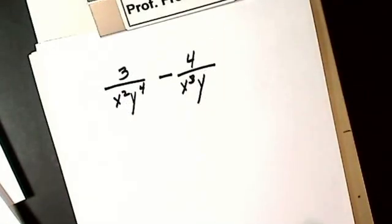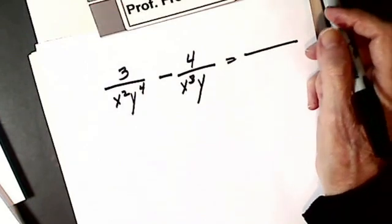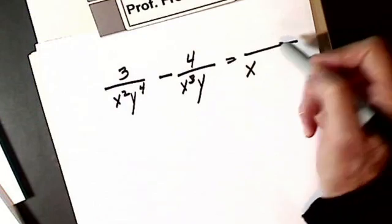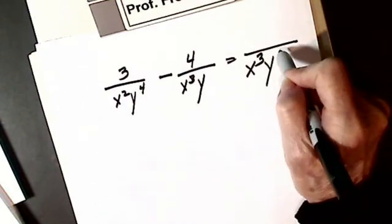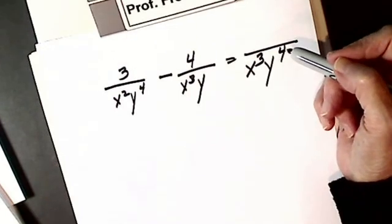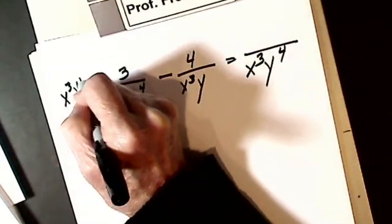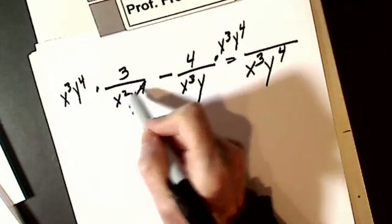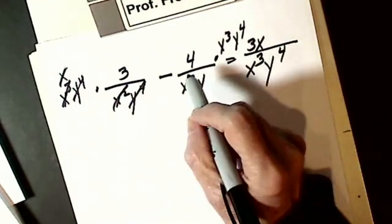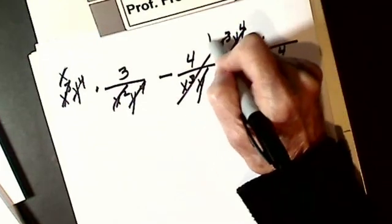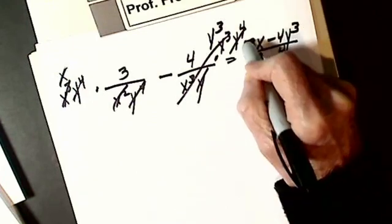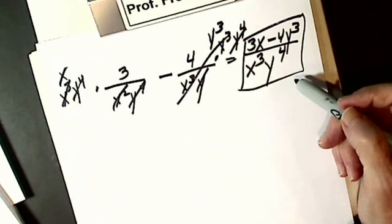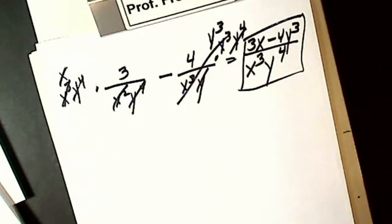Let's do one more with two letters in the denominator. I get my common denominator — one of each factor to the highest power. I need x to the 3rd power and y to the 4th power. I take x cubed y to the 4th, multiply by each term, and cancel. My y to the 4th completely cancels, x squared into x cubed leaves x, so 3 times x is 3x. My x cubed completely cancels, y into y to the 4th leaves y cubed, so minus 4 times y cubed is minus 4y cubed. I get 3x minus 4y cubed over x cubed y to the 4th. Can't factor anything, can't cancel anything — that's it.